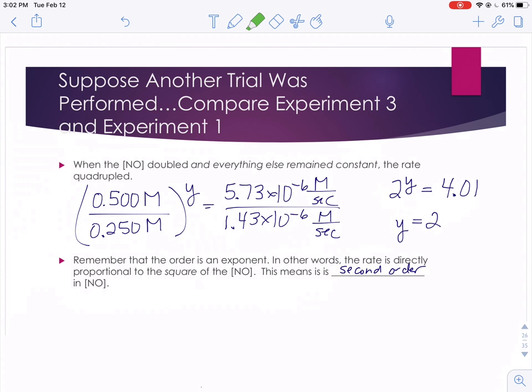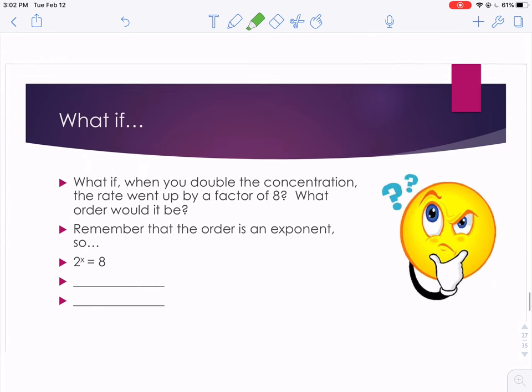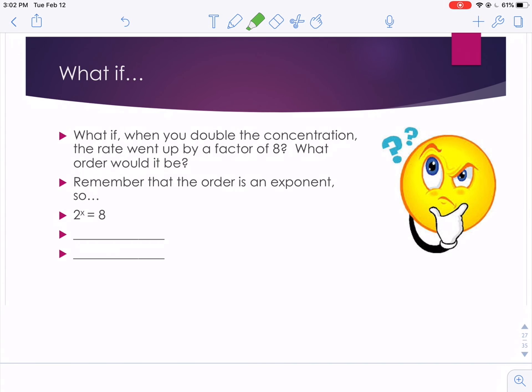What if when you double the concentration, the rate went up by a factor of 8? What would the order be then? So order's an exponent, so you double the concentration. So when you compare experiment 3 to experiment 1, you've doubled that number, but when you look at rate 3 over rate 1, that's going up by 8. So when you go to solve for it, x would have to equal 3. 2 cubed is 8, and so it would be third order.